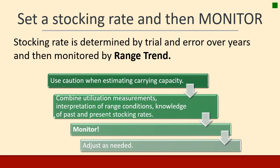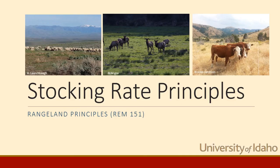The way it should work on range is: you set a stocking rate and then monitor, monitor, monitor — see if you're on track. Do it by trial and error for a few years and then monitor range trend. Use caution if you're just estimating carrying capacity. Combine utilization measurements and interpretations of the range, knowledge of past and present stocking rates, and go out there, take some photos, do some collections to see if you're on track, and then adjust when needed. Range management is not about setting a perfect stocking rate and walking away — it's about setting a reasonable stocking rate and then seeing if it was right and making changes as necessary.